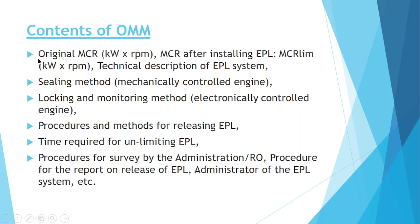What is the content of the OMM? The Onboard Management Manual consists of the original MCR — meaning for what original MCR the engine was made — what is the engine MCR after the EPL limitation, what is the technical description of the EPL, what are the sealing method, mechanical method, or electronic control method, locking and monitoring method for electronic control engines, procedure and method for using the EPL, time for unlocking the EPL, and procedure for survey by administration.